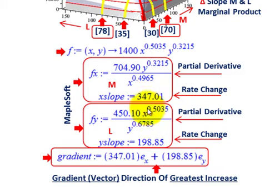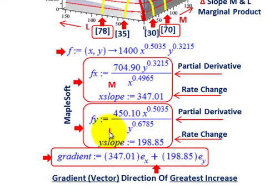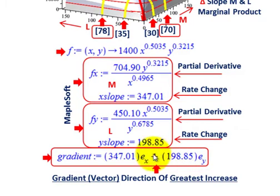We had to do this in order to come up with the gradient vector — the rate of change at that point for both our material and our labor. That becomes what they refer to as our gradient vector. Our x slope, our material, is 347.01 — that's the first part of our gradient vector times its direction. Plus we add the y portion, the labor portion: its slope or rate of change is 198.85 times its direction. So that is our gradient vector.